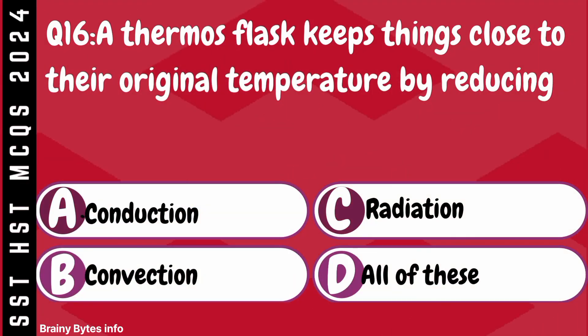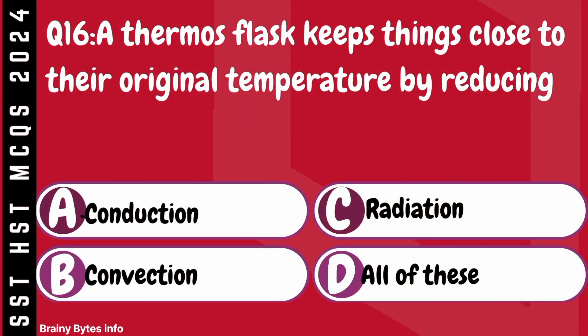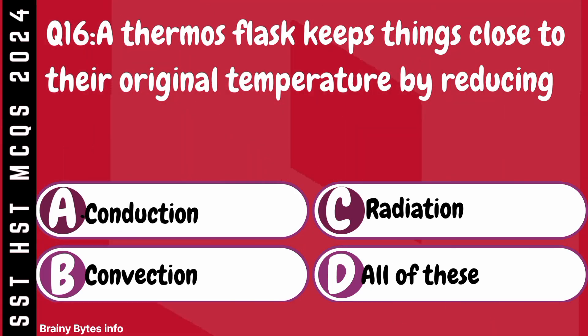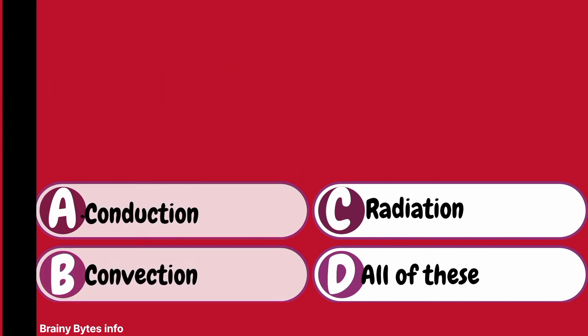Question 16. A thermos flask keeps things close to their original temperature by reducing. A. Conduction. B. Convection. C. Radiation. D. All of these.